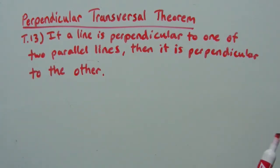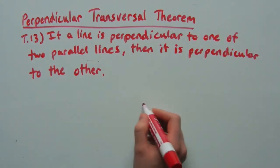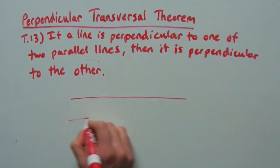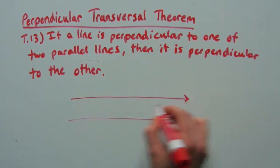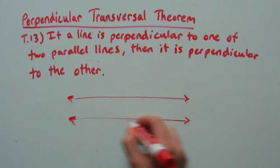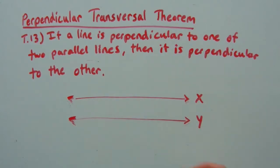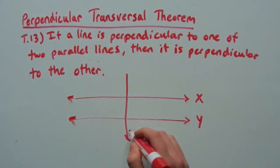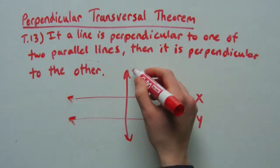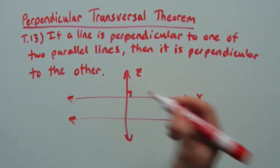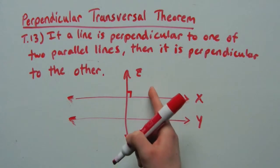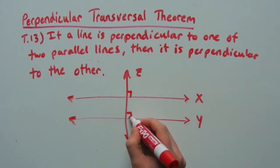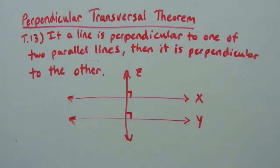If a line is perpendicular to one of two parallel lines, then it is perpendicular to the other. So that's saying if you have two parallel lines X and Y, and you have some line Z that is perpendicular to X, well then Z must also be perpendicular to Y. And we're going to prove that with a two-column formal proof.